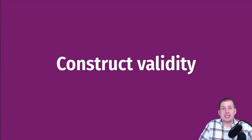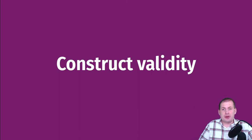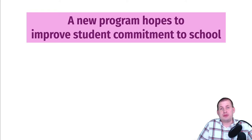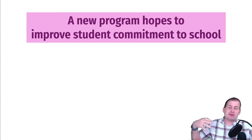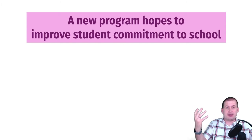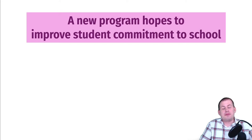The first type of validity we'll talk about today is construct validity. To show an example of where it can go wrong, let's pretend you just ran a randomized control trial about a new program trying to increase commitment to school for students. Your outcome for this program is increased commitment to school — that's in your logic model, that's in your impact theory graph, that's the main thing you care about.